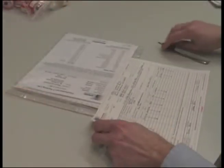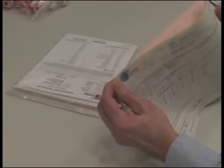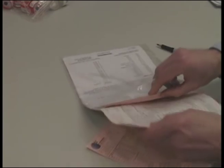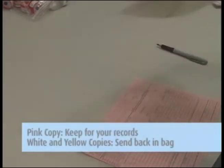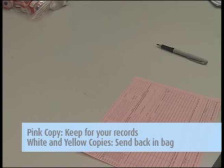Complete the chain of custody form. It is important that you include all the information requested in order to ensure the turnaround time of your samples. Remove the pink copy and keep this for your records. Send the white and yellow copies in with the samples to the lab in the large Ziploc bag.